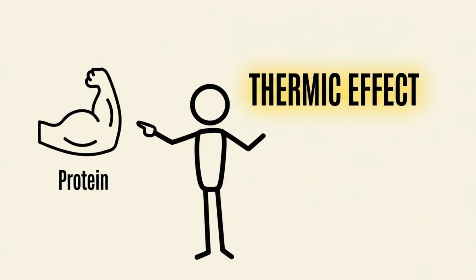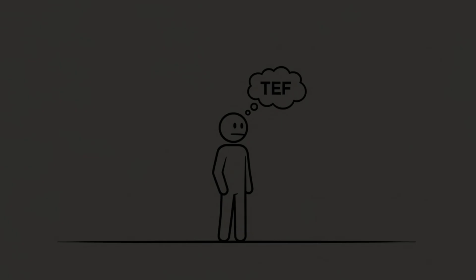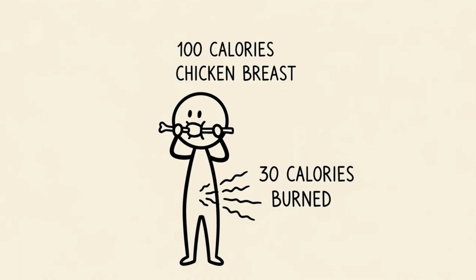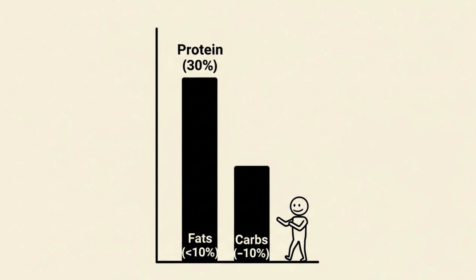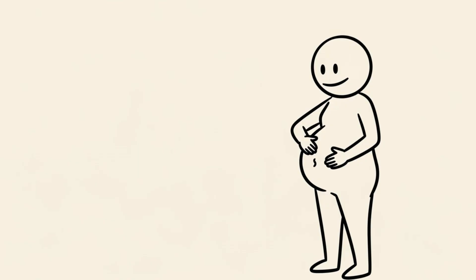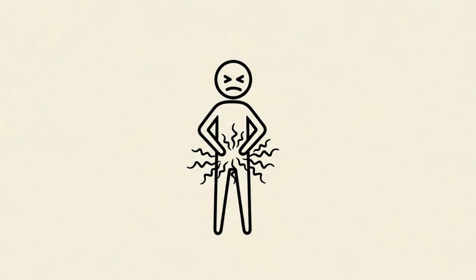There is another massive benefit to protein. The thermic effect. Remember TEF? Protein has a TEF of up to 30%. That means if you eat 100 calories of chicken breast, your body uses 30 of those calories just to digest it. Compared to fats or carbs, which have a TEF of less than 10%, protein is literally a metabolic hack. It keeps you fuller longer and burns more energy to process.